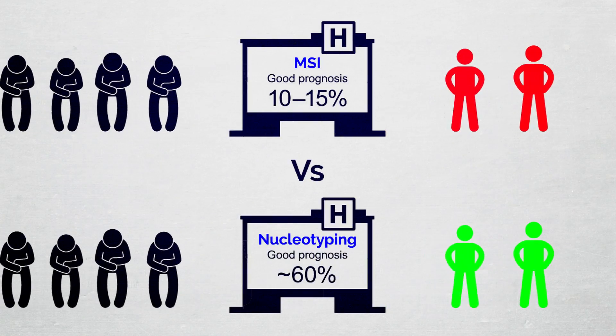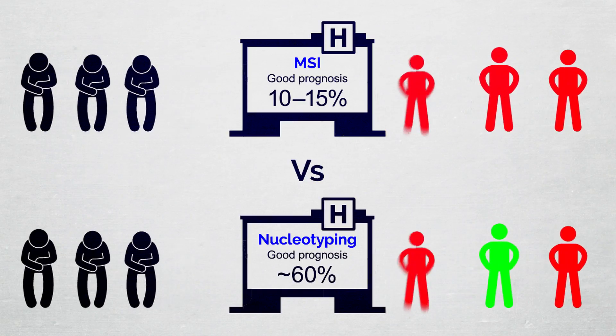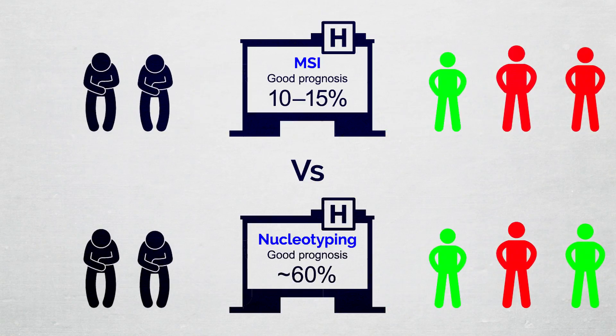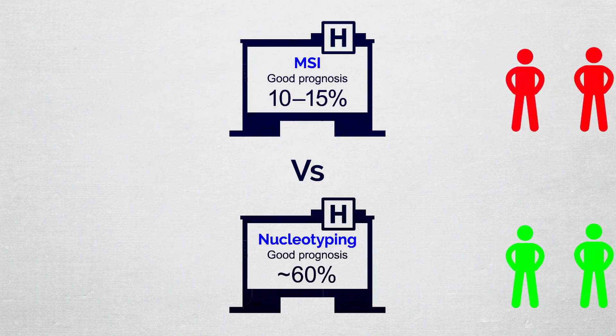Selecting low risk patients by nucleotyping could therefore perhaps identify substantially more stage 2 colorectal cancer patients with presumably small absolute benefit of adjuvant chemotherapy.